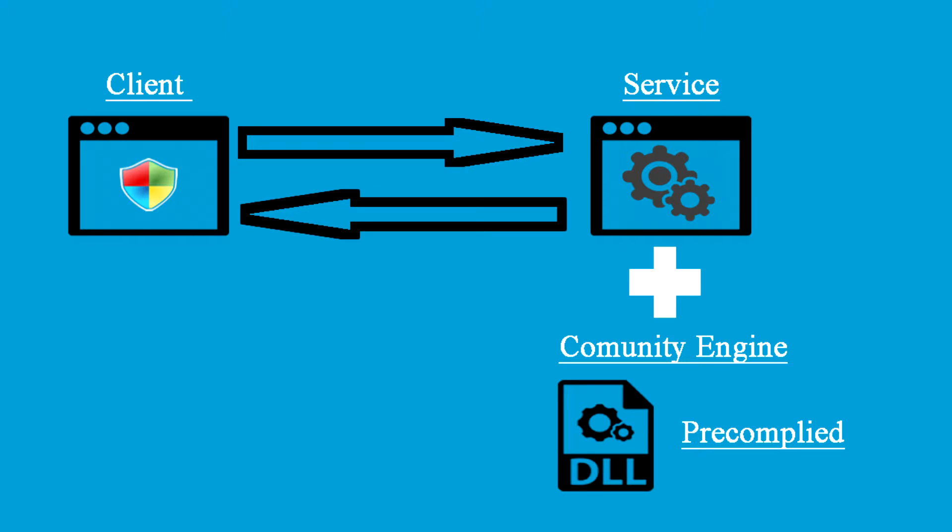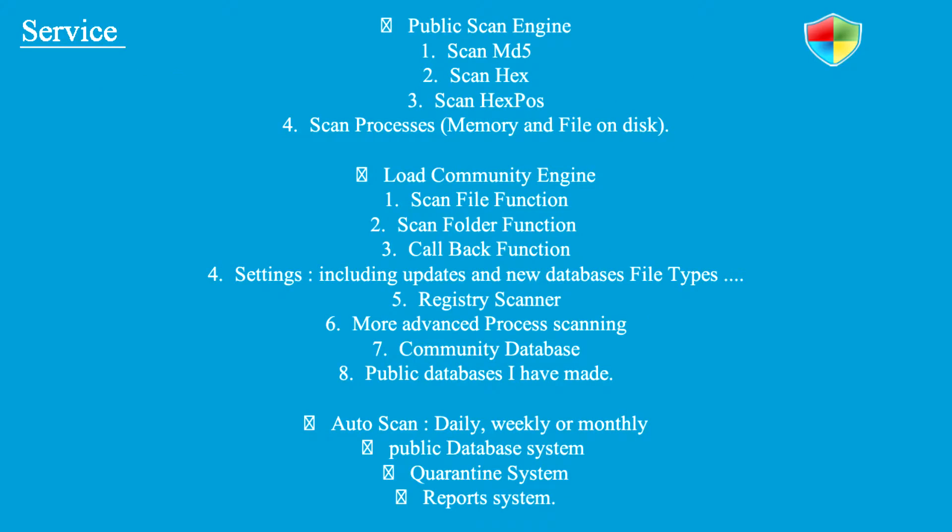The client will talk to the service, the service will hold the engine and the quarantine system. The majority of the workings will be in the service and the client will simply be an interface for the user. These are the basic parts of the service — we have the public engine, and we'll go through the exact same things we had in the last version except we will streamline them out quite considerably.